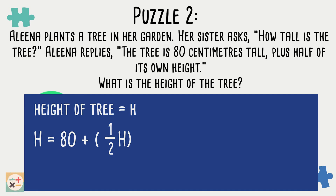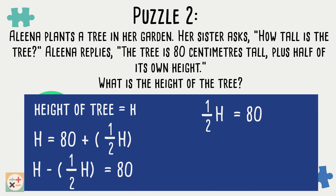Now we can rearrange the equation so both h variables are on one side of the equal sign. If we take half of the height away from the height, we are left with the other half of the height. We can see this also equals 80cm. Now we know that half the height is 80cm, we can substitute this back into the original equation and calculate the entire height of the tree.